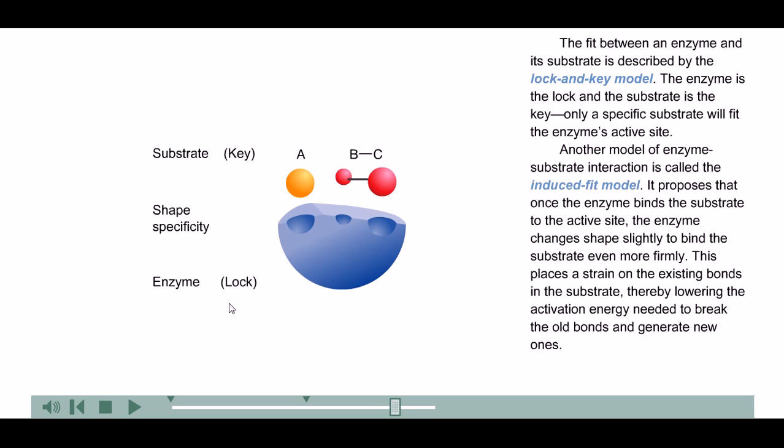The fit between an enzyme and its substrate is described by the lock and key model. The enzyme is the lock, and the substrate is the key. Only a specific substrate will fit the enzyme's active site. Another model of enzyme-substrate interaction is called the induced fit model. It proposes that once the enzyme binds the substrate to the active site, the enzyme changes shape slightly to bind the substrate even more firmly. This places a strain on the existing bonds in the substrate, thereby lowering the activation energy needed to break the old bonds and generate new ones.